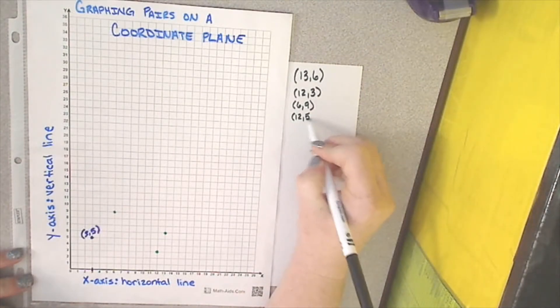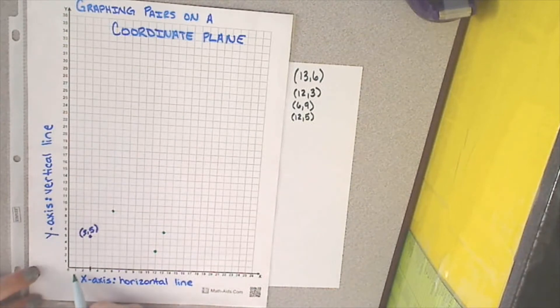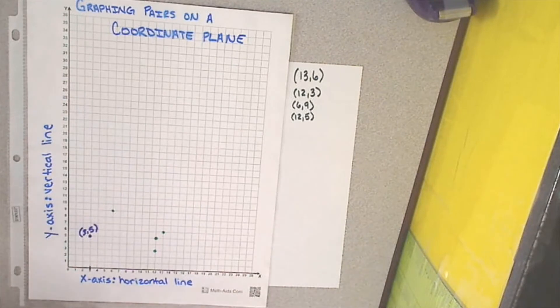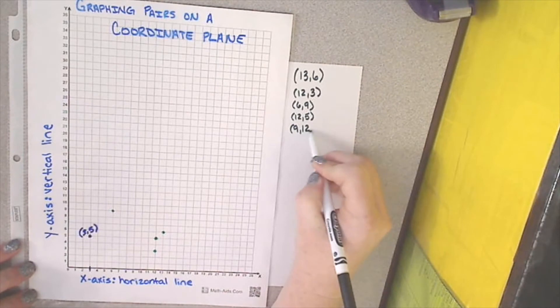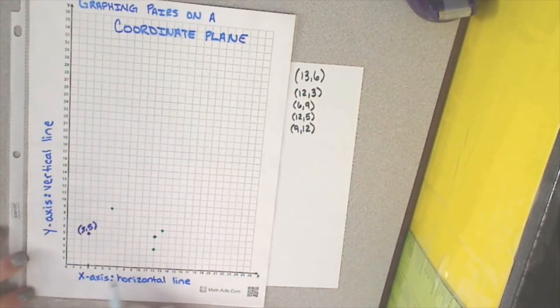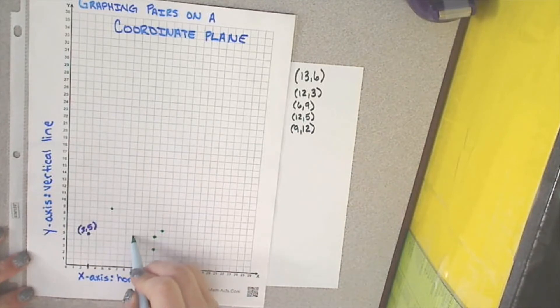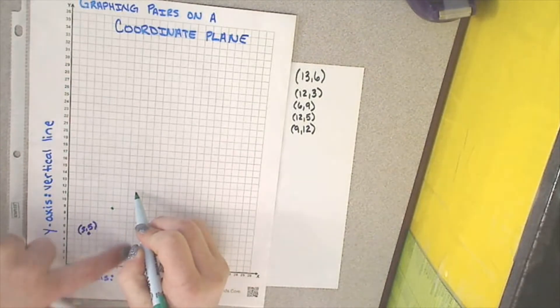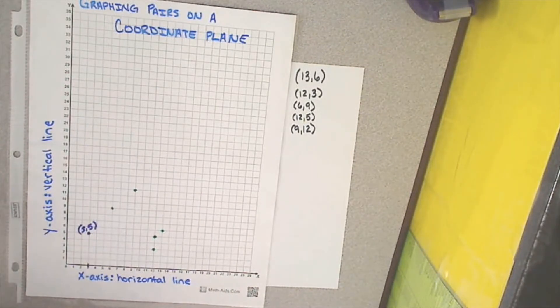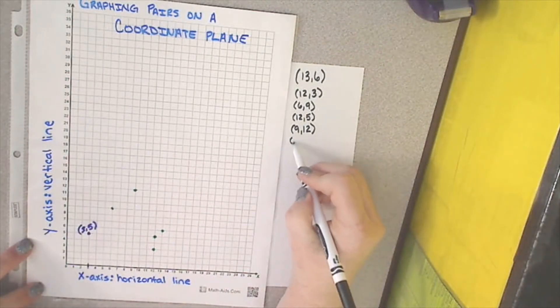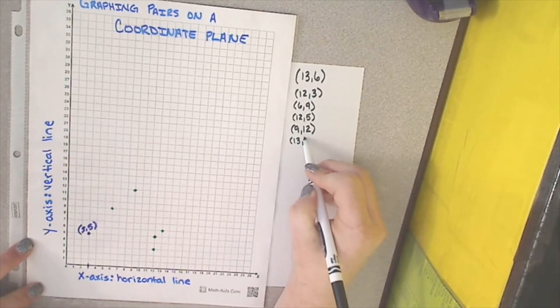Now, we're going to find 12 comma 5. I'm going to come all the way down to 12 and go up to 5. Next is 9 comma 12. I'm following the line up from 9 until I get to 12. Then 13 comma 14.